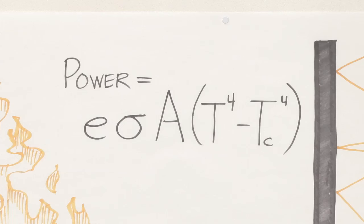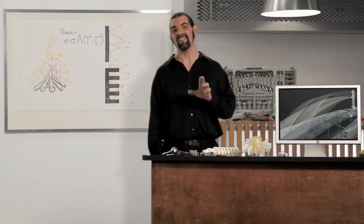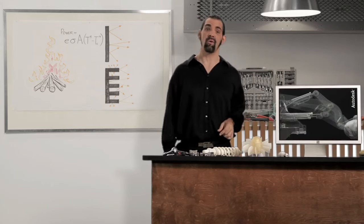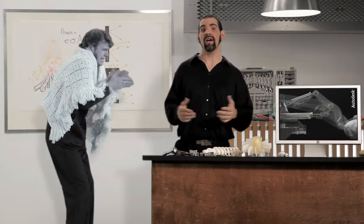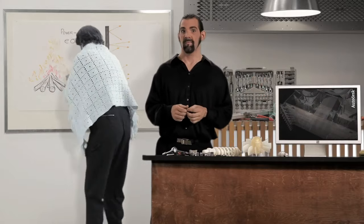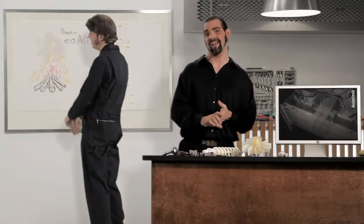The third variable for radiation heat transfer is the temperature difference between the object and its surroundings. And temperature is raised to the fourth power. That's huge. That's why you can't warm yourself from a person's radiation, but you can from a fire's radiation.